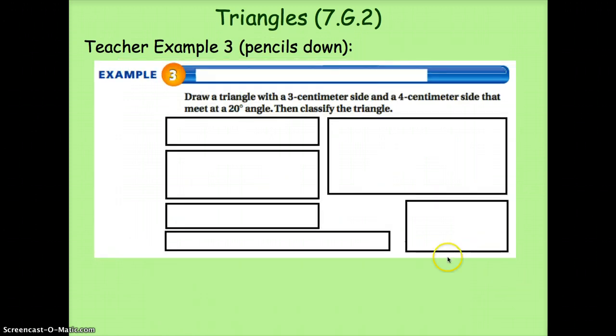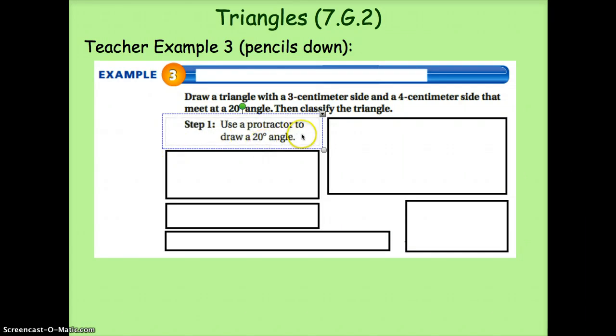Teacher example three. Draw a triangle with a three centimeter side, a four centimeter side, that meet at a 20 degree angle. Then classify the triangle. So we can start with step one. Use a protractor to draw a 20 degree angle.